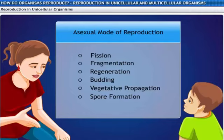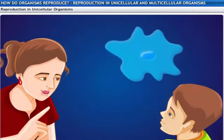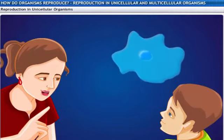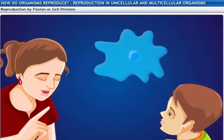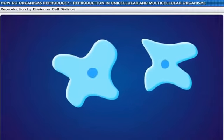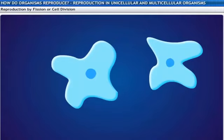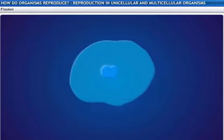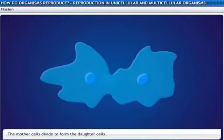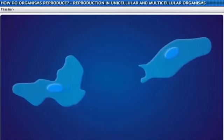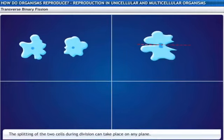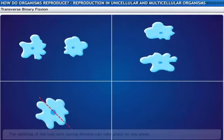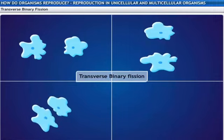Let's begin at the very beginning. Can you think of a simple unicellular organism? How about amoeba? Good example. Amoeba is a unicellular organism that reproduces by cell division — a cell dividing into two or more cells. It is also called fission. The mother cells divide to form the daughter cells. Many different patterns of fission have been observed in amoeba. In organisms like amoeba, the splitting of the two cells during division can take place on any plane. This is called transverse binary fission.